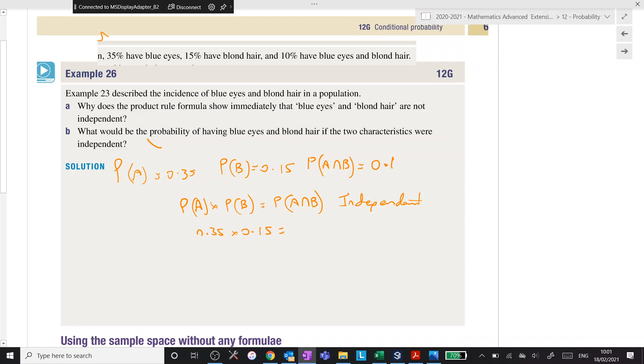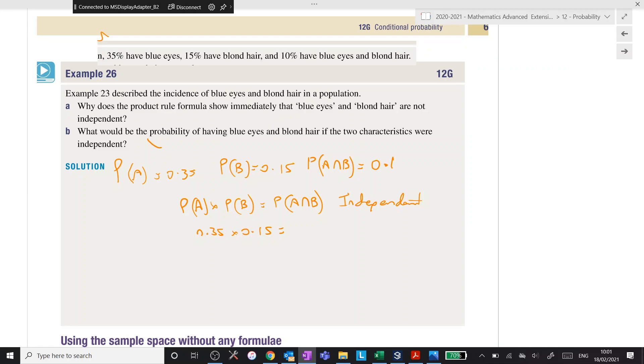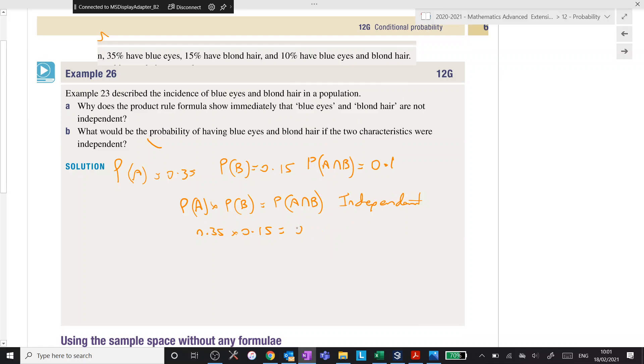Yep, so 0.15 times 0.35 would give you 0.052, was it? Wow. Having lots of fun with my pen today, already. I swear it's a new battery.